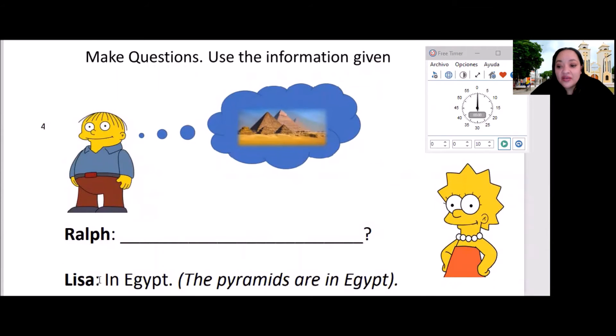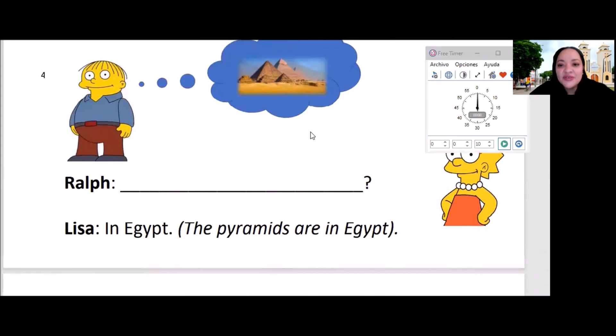So, the clue, the answer is in Egypt. The pyramids are in Egypt. What's the question? Ready? Go. So, the question to this one is, Where are the pyramids? You got it like that? Yes. Good. Excellent job. Let's go to number five.